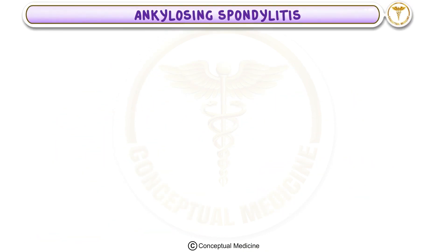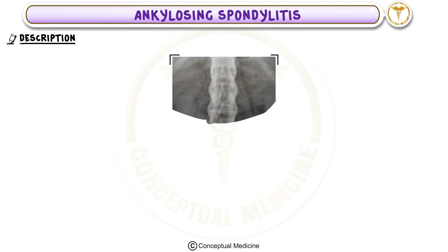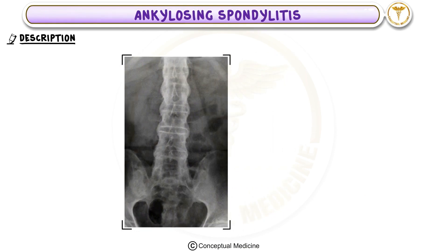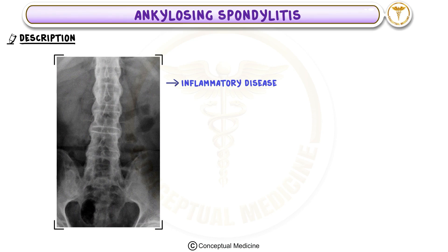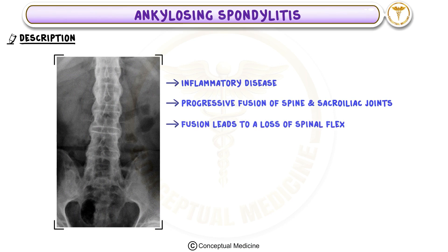Ankylosing spondylitis is an inflammatory disease characterized by progressive fusion of the spine and sacroiliac joints. This fusion leads to a loss of spinal flexibility and, in advanced stages, a rigid spine.